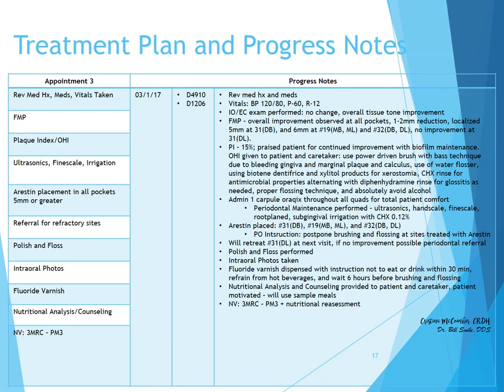At appointment three, our 6-week reevaluation: after reviewing vitals and medical history, an intraoral exam is performed and we observe tissue tone. A full mouth probing will be performed. We see a localized overall 1 to 2mm reduction — specifically from 6mm to 5mm at 31 distal buccal, and 7mm to 6mm at 19 mesial buccal and mesial lingual, and number 32 distal buccal and distal lingual, with no improvement observed at 31 distal lingual. The plaque index has improved to 15%. We praise the patient and continue to give OHI instruction to both the patient and the caretaker. Based on tissue tone and patient needs, Oraqix is recommended.